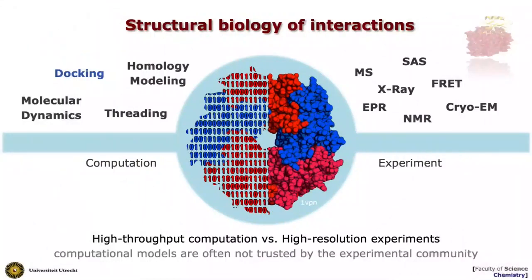Now if we consider the structural biology of interactions of complexes, you see here a picture with both the experimental methods on the right side and the computational methods on the left side. You have the classical structural biology methods like cryo-electron microscopy, very popular and powerful these days, X-ray crystallography, and nuclear magnetic resonance. All three methods can deliver a structure at atomic resolution, but they don't always do that — there are always limitations, which is why you would also need modeling in this context.